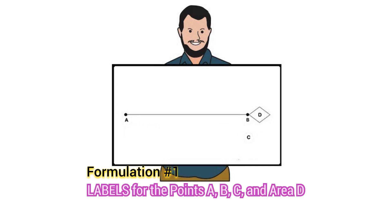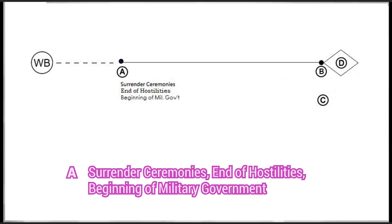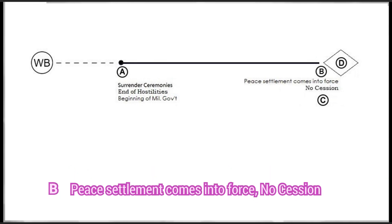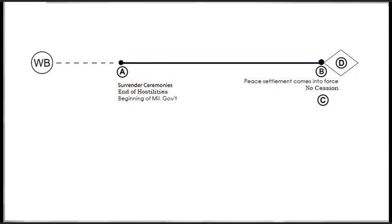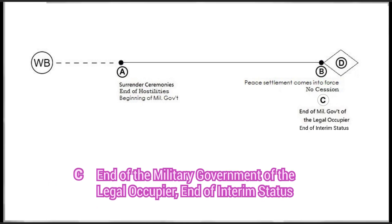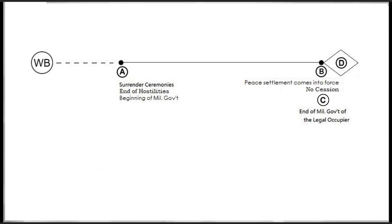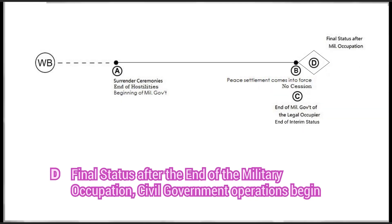Formulation No. 1 — Labels for the Points A, B, C, and Area D. A: Surrender Ceremonies, End of Hostilities, Beginning of Military Government. B: Peace Settlement Comes into Force, No Session. C: End of the Military Government of the Legal Occupier, End of Interim Status. D: Final Status After the End of the Military Occupation, Civil Government Operations Begin.